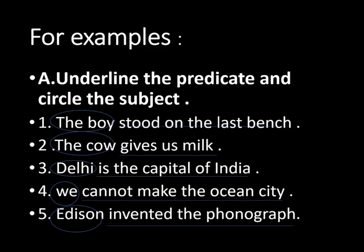Question 2: 'The cow gives us milk.' Whom are we talking about? The cow. So 'the cow' is the subject, and 'gives us milk' is the predicate — it tells us what the subject does. Question 3: 'Delhi is the capital of India.' Whom are we talking about? Delhi. So 'Delhi' is the subject, and 'is the capital of India' is the predicate.